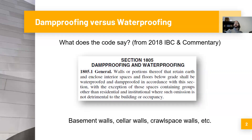From the 2018 code and commentary — that's what we're going to be using to look at this code section today. Damp proofing and waterproofing, Section 1805, that's Chapter 18 of the code. The general provision states: walls or portions thereof that retain earth and enclose interior spaces, and floors below grade, shall be waterproofed and damp proofed in accordance with this section.